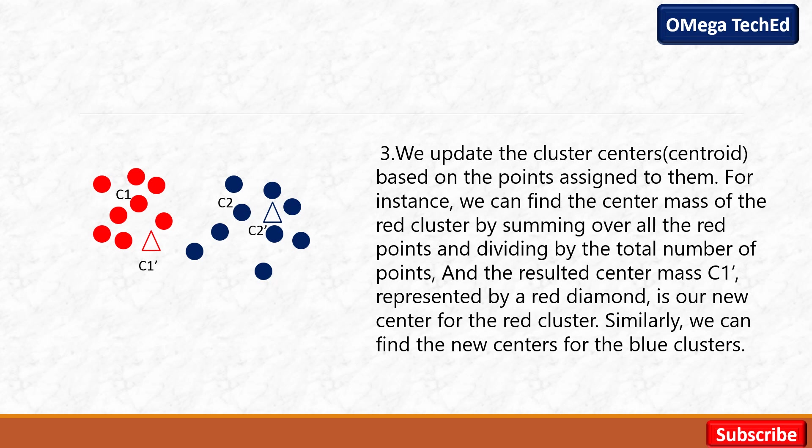In the third step, we update the cluster centers based on the points assigned to them. We revise the cluster center — in the first step we had randomly initialized it, now we change it. We take the mean of the assigned data points and according to the mean, we take the new cluster center. The first cluster center was C1, now we have the updated cluster center denoted C1-prime (shown as triangle shape). Similarly for the second blue cluster, the first center was C2, but after updating we have C2-prime.